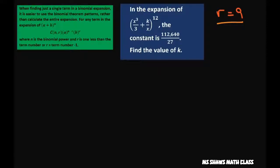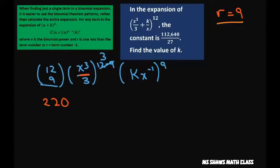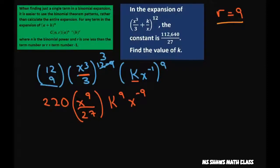Now I'm going to plug in r equals 9 and solve for k. I have 12 choose 9 times x cubed divided by 3 to the 12 minus 9 power, times kx to the negative 1 to the 9th power. 12 minus 9 is 3, and 12 choose 9 is 220. This gives us x to the 9th over 3 cubed (which is 27), times k to the 9th, times x to the negative 9th.